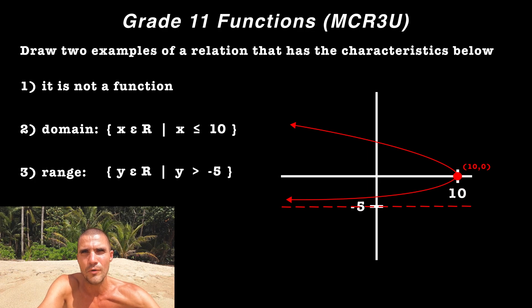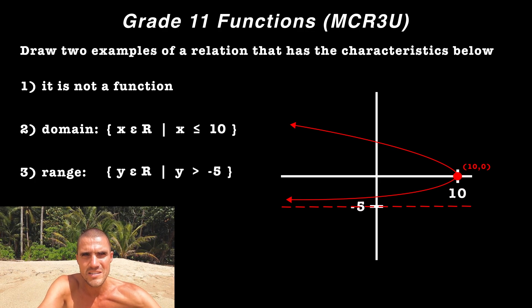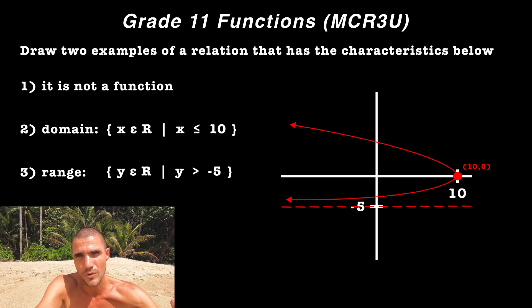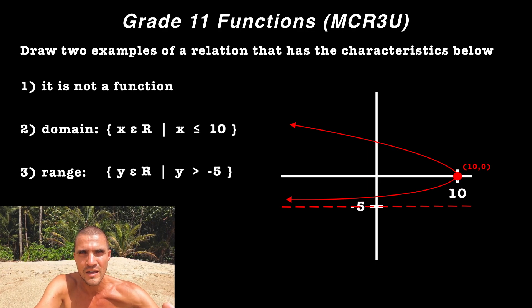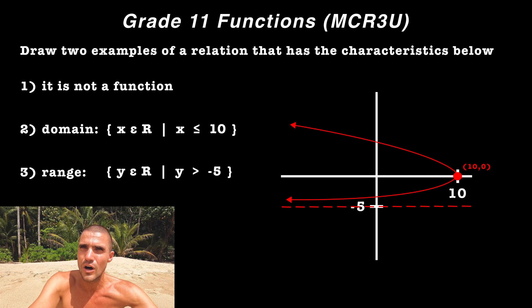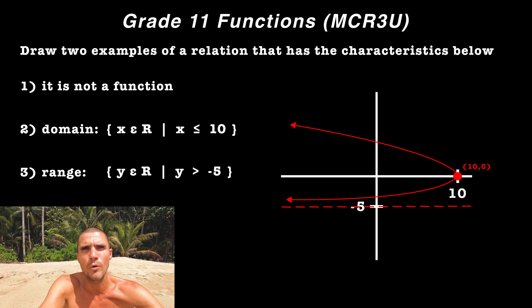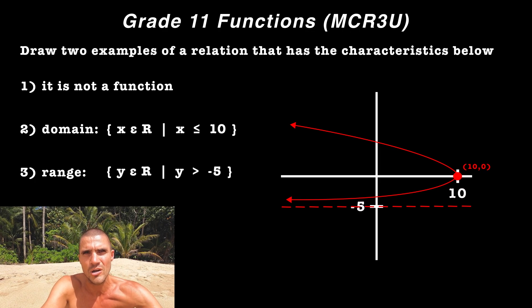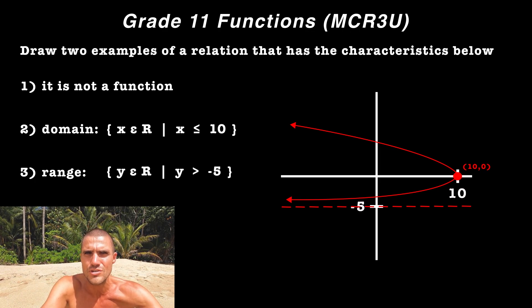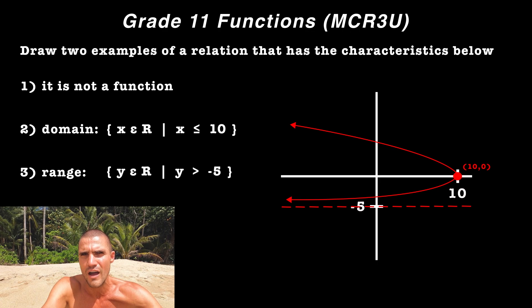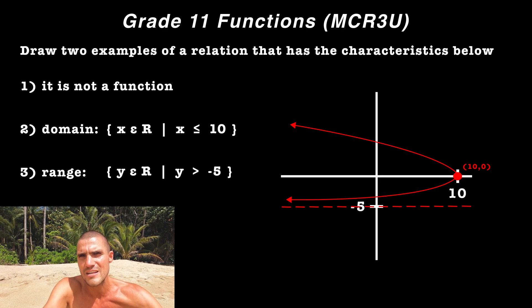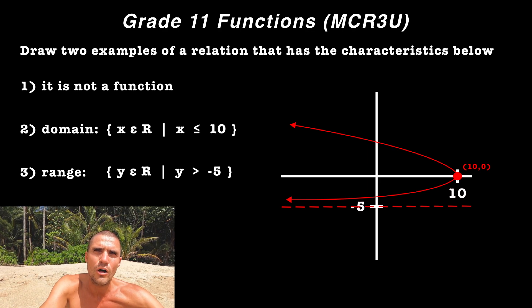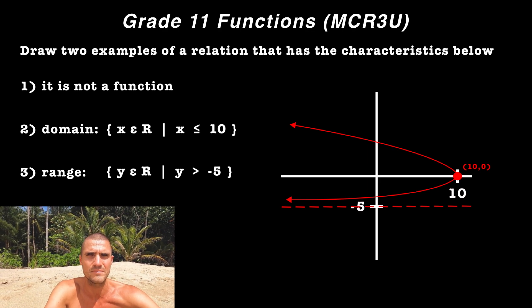And so again, we have a sideways parabola where this time it's not ending at that point zero negative five. It has a horizontal asymptote at that Y value of negative five. And notice that this graph also satisfies the characteristics. Number one, it's not a function because it's failing the vertical line test. Number two, all the Y values are greater than negative five. And then it satisfies the domain where X ∈ R and all the X values are less than or equal to 10.